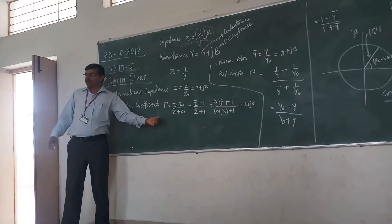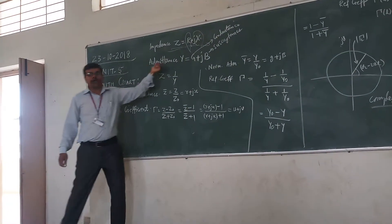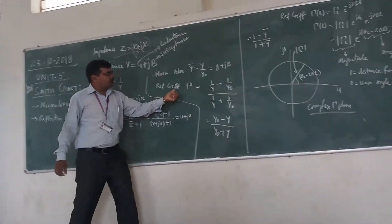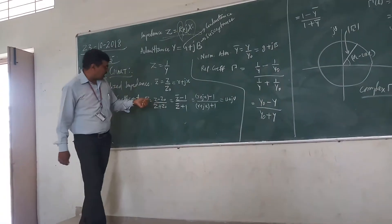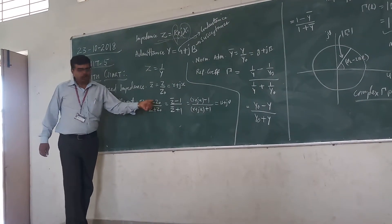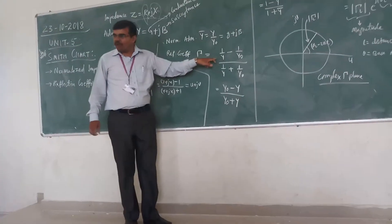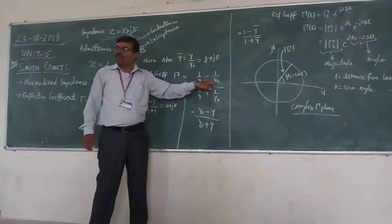we can find the reflection coefficient in terms of admittance. The reflection coefficient in terms of admittance: you have Z minus Z0, so it will be 1 by Y minus 1 by Y0.